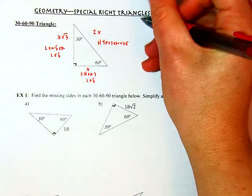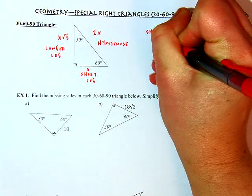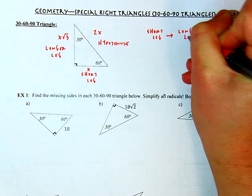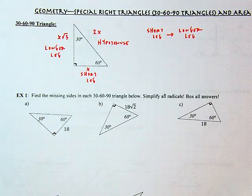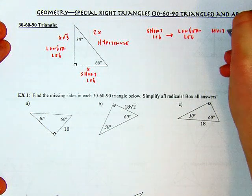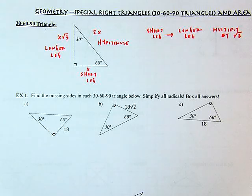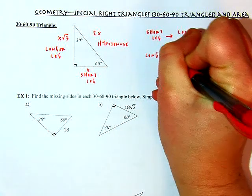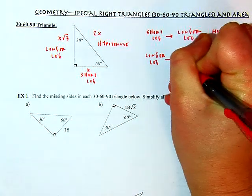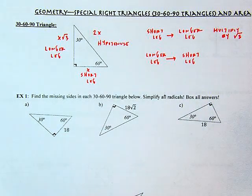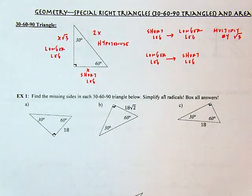If I start at the short leg and I'm trying to go to the longer leg, I multiply by the square root of 3. If I'm going short leg to hypotenuse, I just multiply by 2. Going in reverse — from the longer leg to the short leg — I'm dividing by the square root of 3, and then I have to rationalize the denominator.